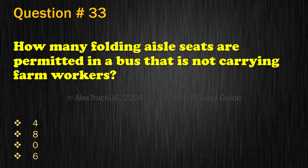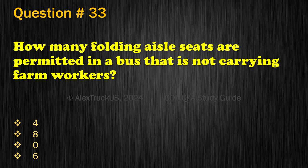Question 33. How many folding aisle seats are permitted in a bus that is not carrying farm workers? 4, 8, 0, or 6. The correct answer is: 0.